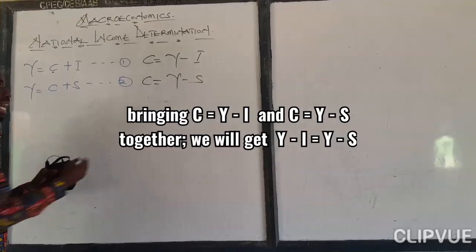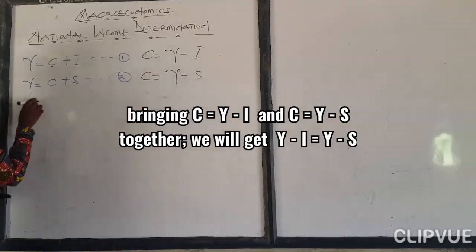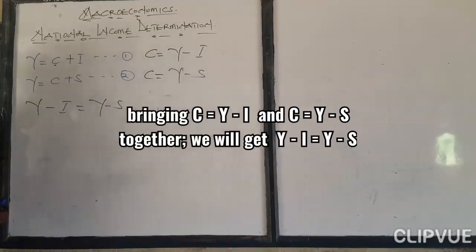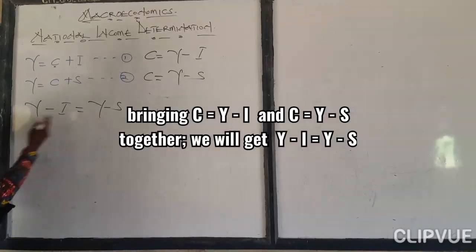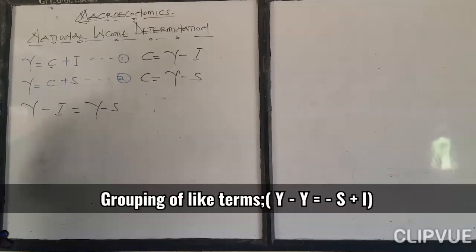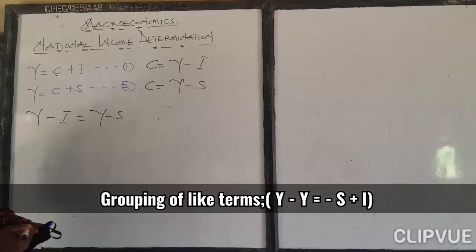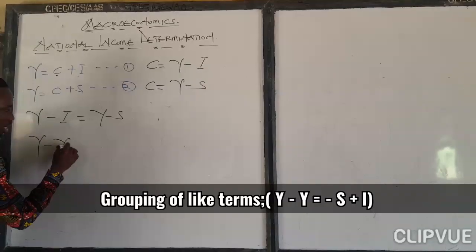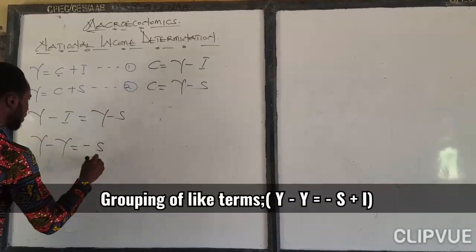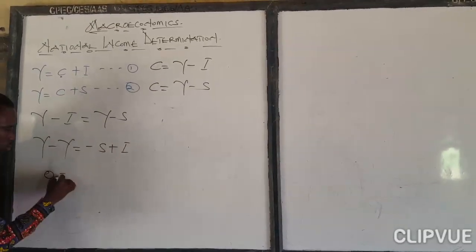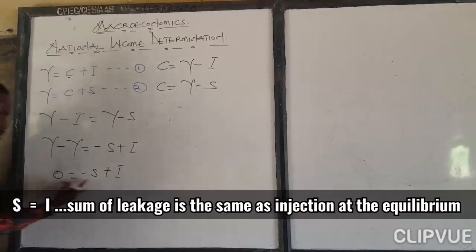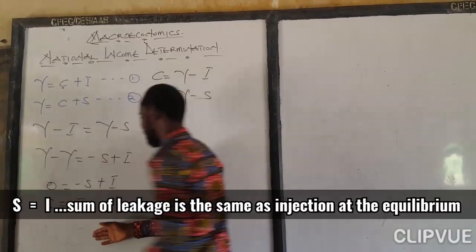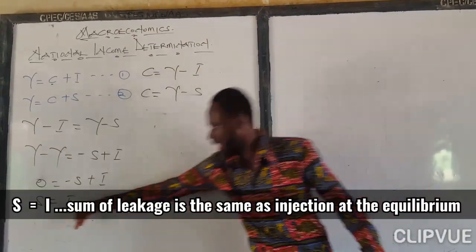If we bring the two together: C equals Y minus I, and C equals Y minus S. So it means that Y minus I equals Y minus S. Grouping like terms, income minus income equals zero, giving us minus S plus I equals zero. Bringing S to the other side, we get S equal to I. So under the two-sector economy, we are saying that savings is equal to investment.